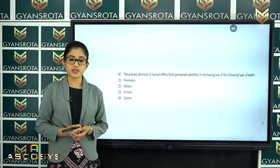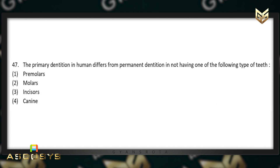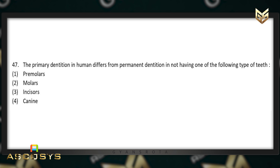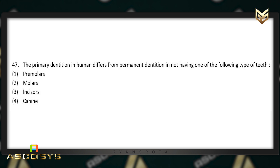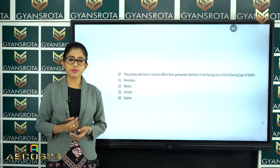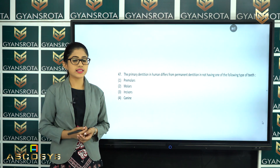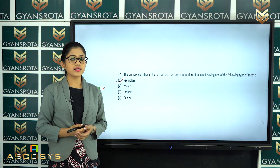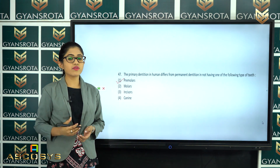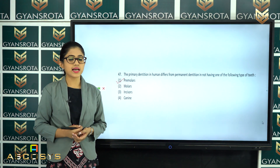The next question is question number 47. The primary dentition in humans differs from permanent dentition in not having which type of teeth — premolar, molar, incisor, or canine? From the chapter Digestion and Absorption, the correct answer is option number 1 — premolar. The primary dentition in humans differs from the permanent dentition in the absence of premolar teeth.